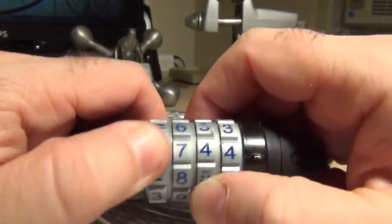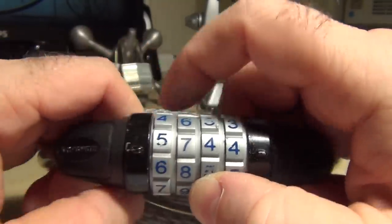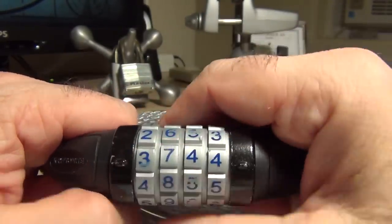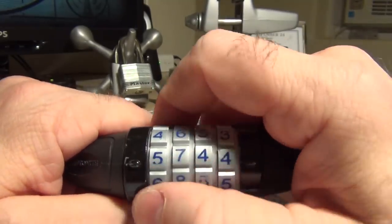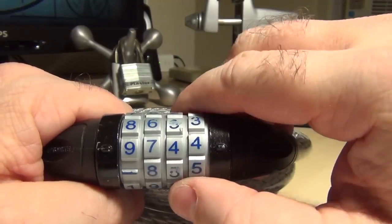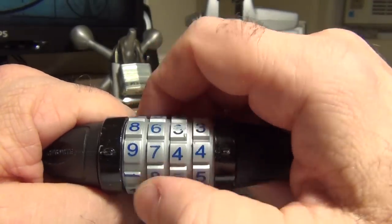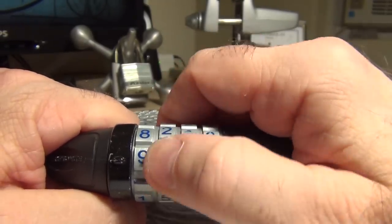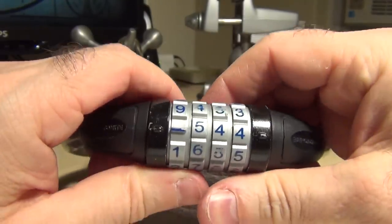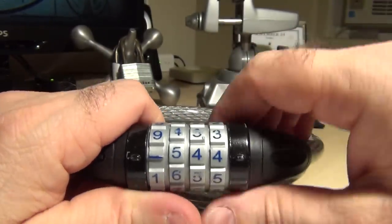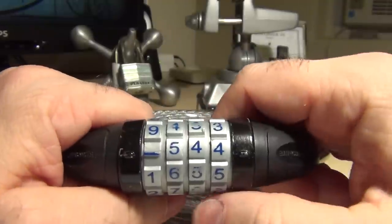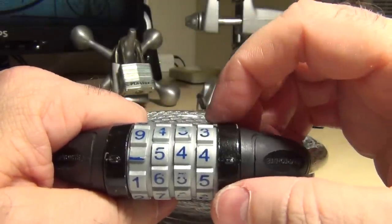So this is the difficult thing about these locks. Some combination locks you're able to just find a binder and the true gate because there aren't any false gates, but in this lock there's two false gates and one true gate for each wheel. I've got them all bound up now. When I apply tension, these things won't move at all.